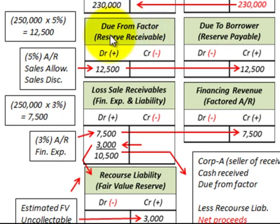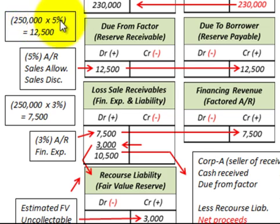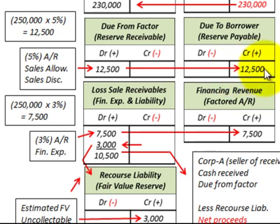Next, we set up the 'due from factor' account for Corporation A — like an accounts receivable reserve — and Bank B sets up a 'due to borrower' account, acting as a reserve payable. This represents the 5% reserve for sales allowances and discounts: $250,000 times 5% equals $12,500. Corporation A debits their 'due from factor' account for $12,500, and Bank B credits their reserve payable account for $12,500.